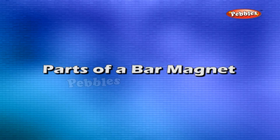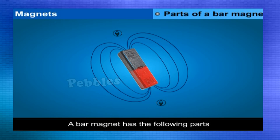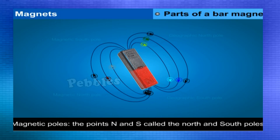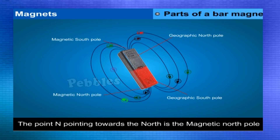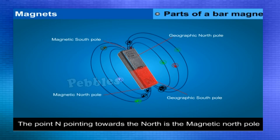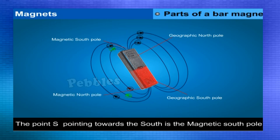A bar magnet has the following parts. The points N and S at the two ends of the magnet are called the north and south poles. The point N at the end of a freely suspended bar magnet pointing towards the north is the magnetic North Pole. The point S at the end pointing towards the south is the magnetic South Pole.